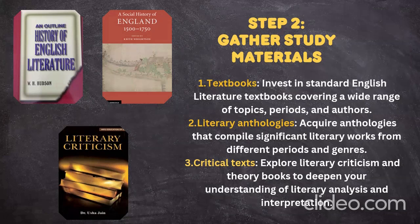Keep buying the textbook and primary texts — that will be better. For English literature, focus on the history of English literature, social history of England, and literary criticism. These are the major books to go through. Literary anthologies will help you with significant literary works across different periods and genres. You can also go through reference books and book reviews.